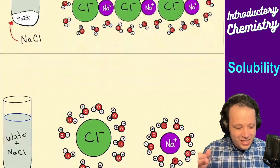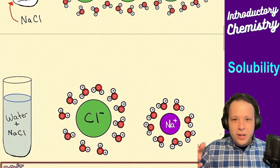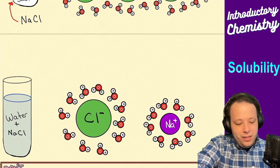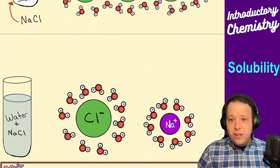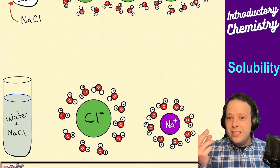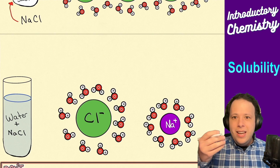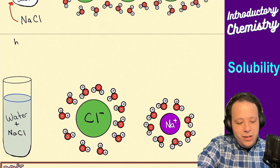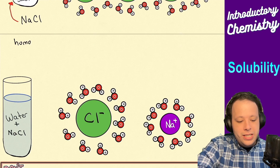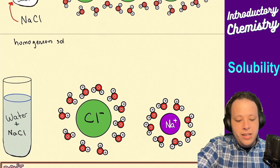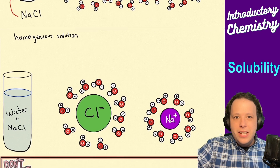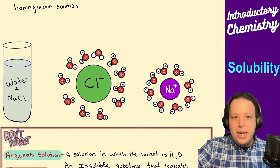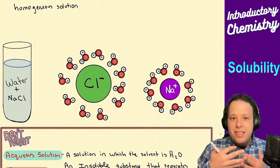When you mix salt and water, can you see the salt anymore once it mixes? No, you can't. You have made a homogeneous solution, meaning it is fully uniform. You're no longer able to see a difference between the two layers.